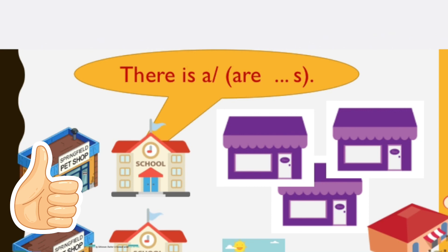Use 'there is' or 'there are' plus a number plus a noun. For example: there are two pet stores, there are two schools, there are three toy stores, there is a park, there is a restaurant.